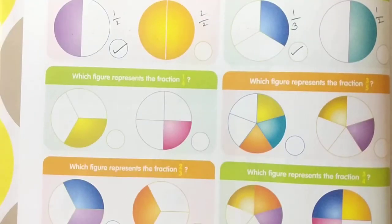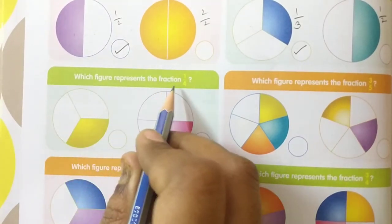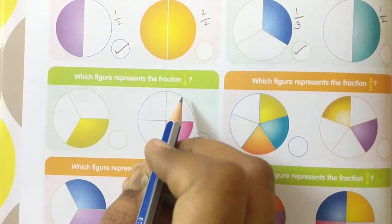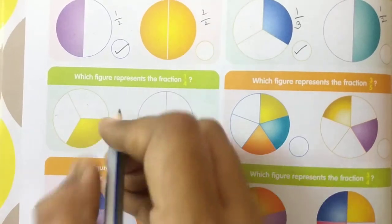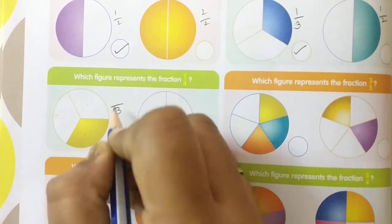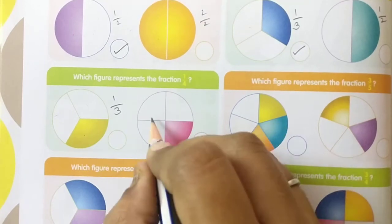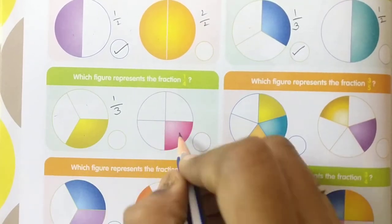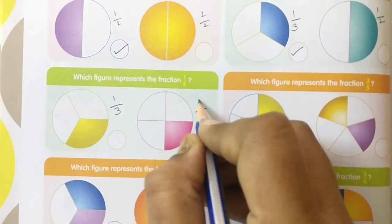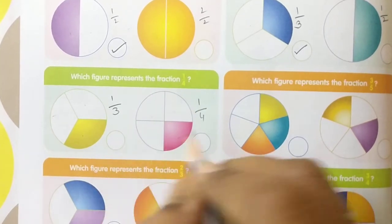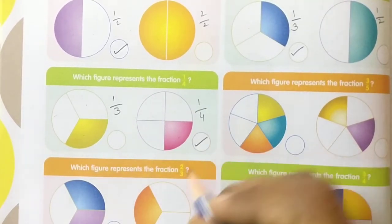Next come to the next one. Which figure represents the fraction 1 by 4? First figure: 1, 2, 3 parts — 1 part is shaded. Second figure: 1, 2, 3, 4 — total 4 parts, 1 part is shaded. Which one is correct? 1 by 4 is the second figure. So keep your tick mark there.